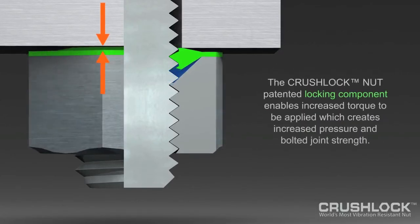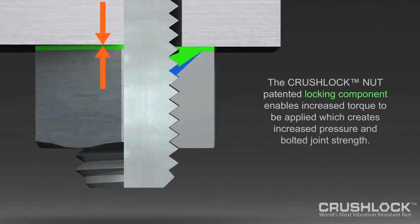installed on a bolted joint. Crushlock Permanent Nut keeps the bolt under pressure even if the nut is destroyed in profile cutting or other damage.